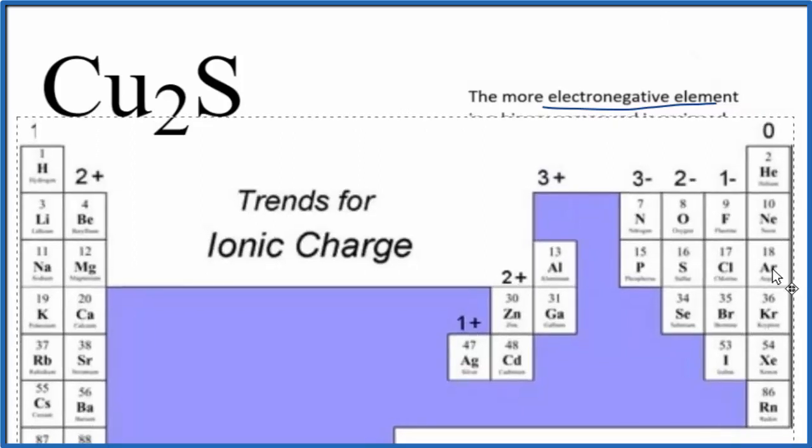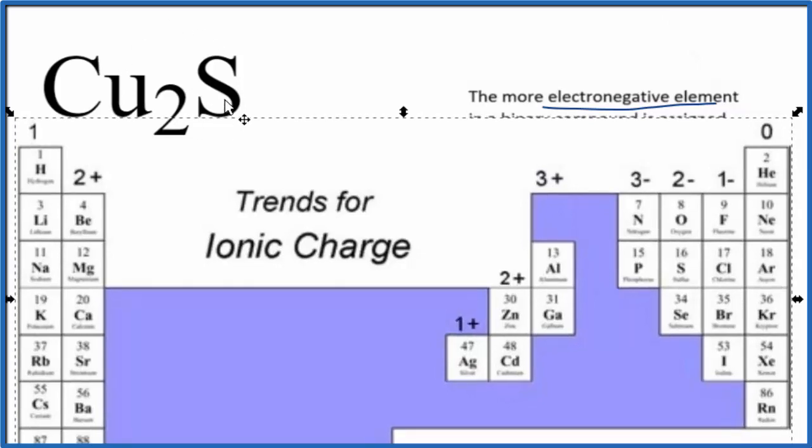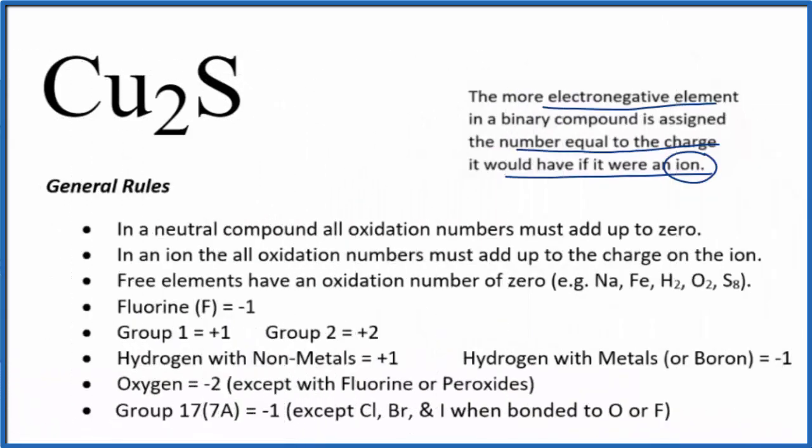So we have the charge for the sulfur. We said that would be equal to the oxidation number because sulfur is more electronegative. Copper is over here somewhere. Here's sulfur right next to the most electronegative element on the periodic table. So we know the charge on sulfur, so the oxidation number, that's going to be minus 2.